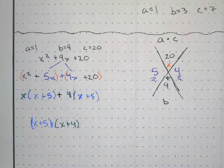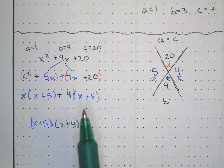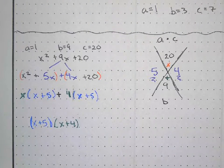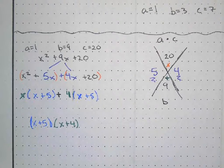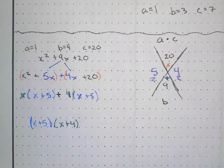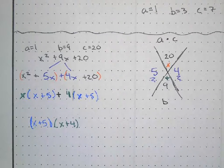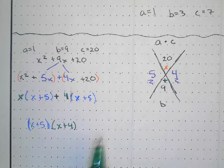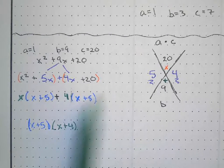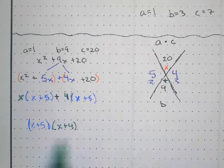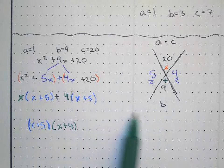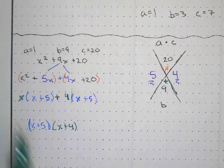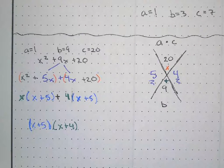There's actually a shortcut in here, but I'm not going to show it to you — I'll let you try to find it. This shortcut only works when a equals one, which is why I don't like to lean on it too heavily. You can see it if you compare the final answer with what happened in the AC method.